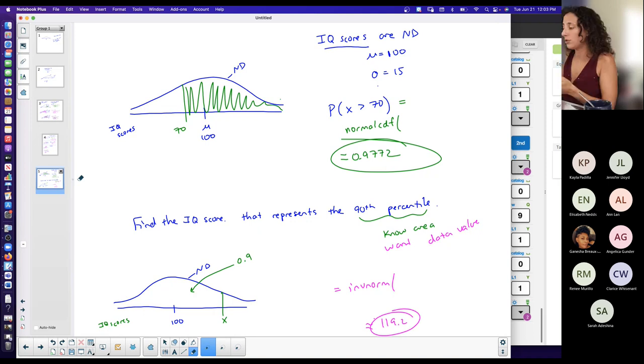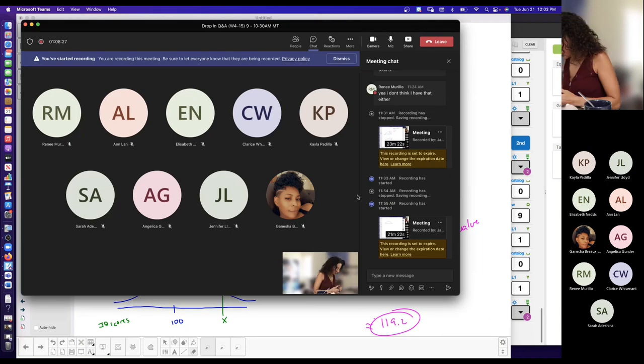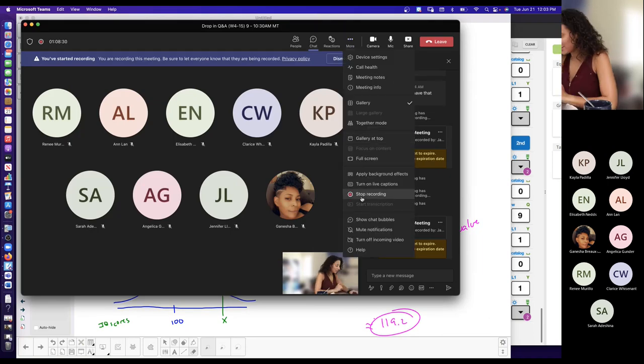And I want you to get really good at that because you're going to use it again later. And I'm telling you, when people get to it later on, they forget this basic stuff where it's if I want area, normal CDF. If I know area, inverse norm. They forget that and it becomes harder later. So get really good at it. I want to practice the heck out of it.